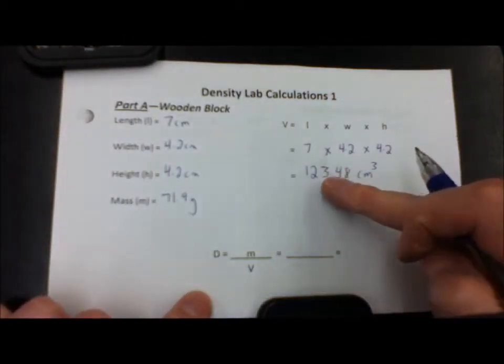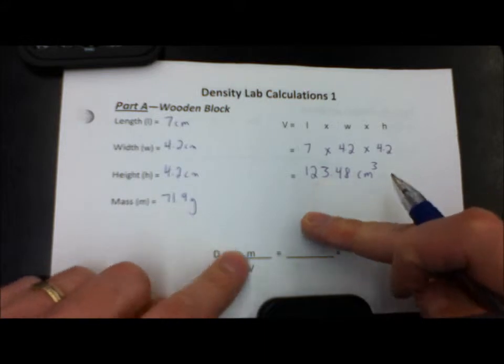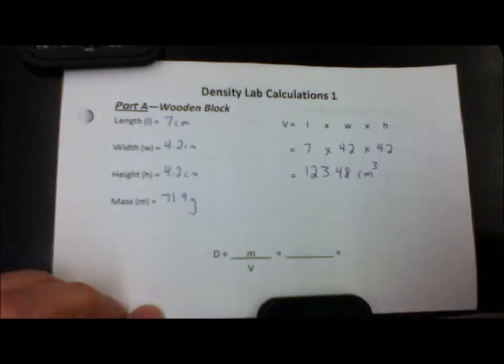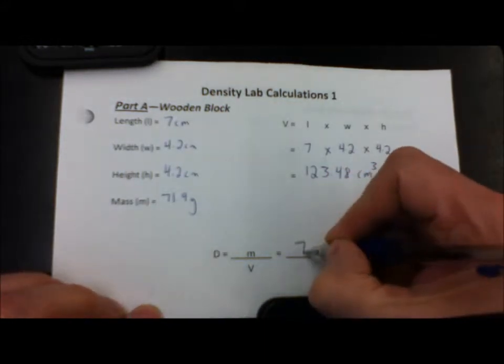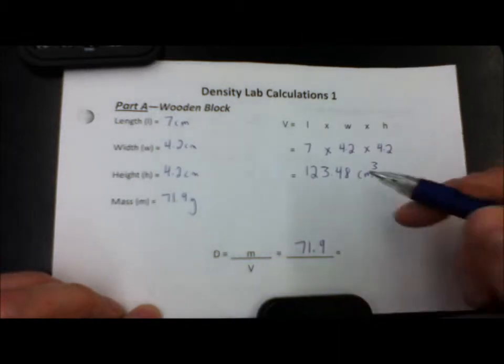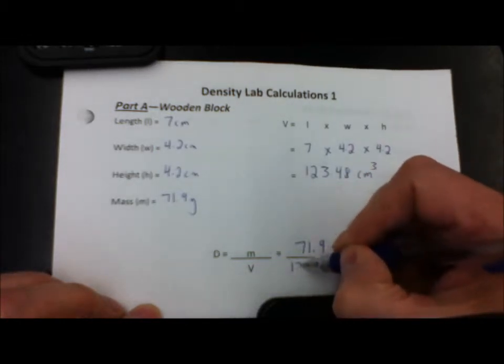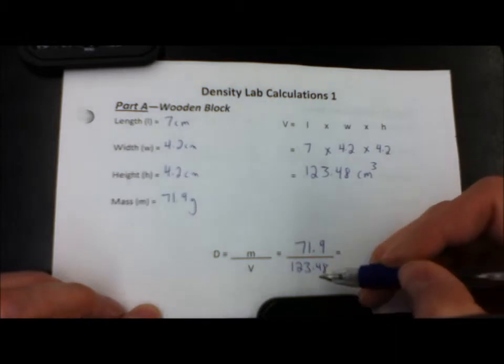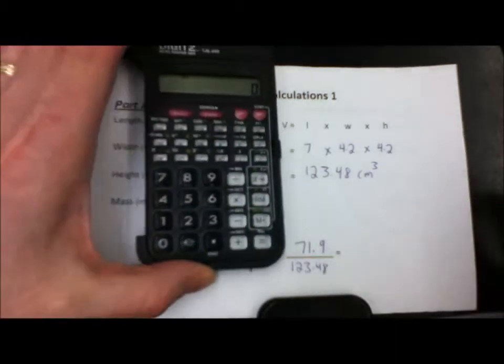Now we want to take our answer here and our mass value and put it into our density formula. So the mass is 71.9 grams. We calculate the volume to be 123.48. So I'll divide that value, 123.48, into 71.9.